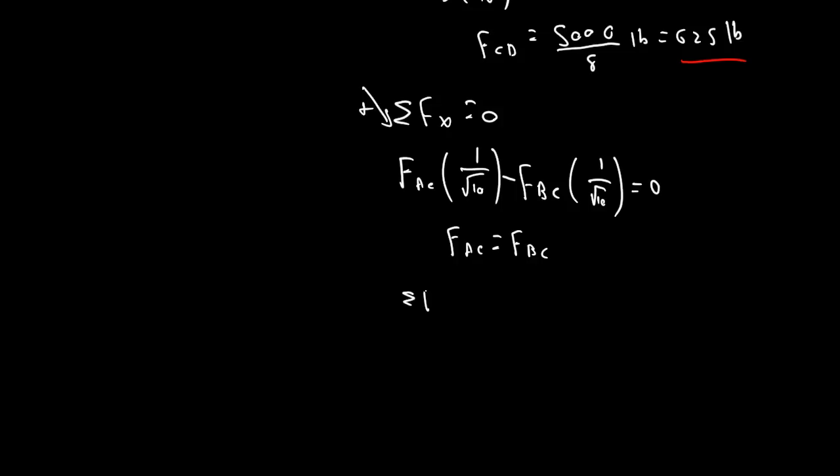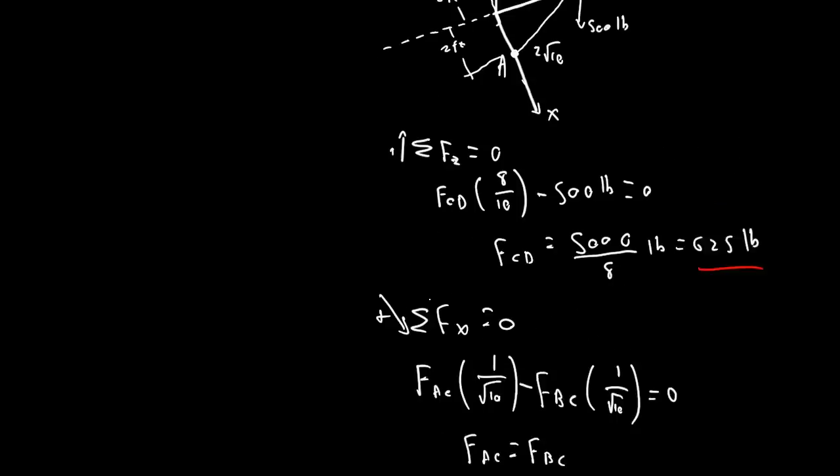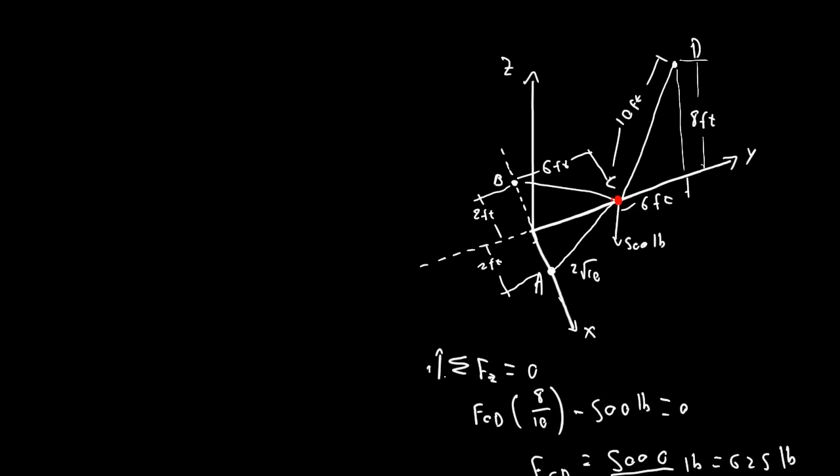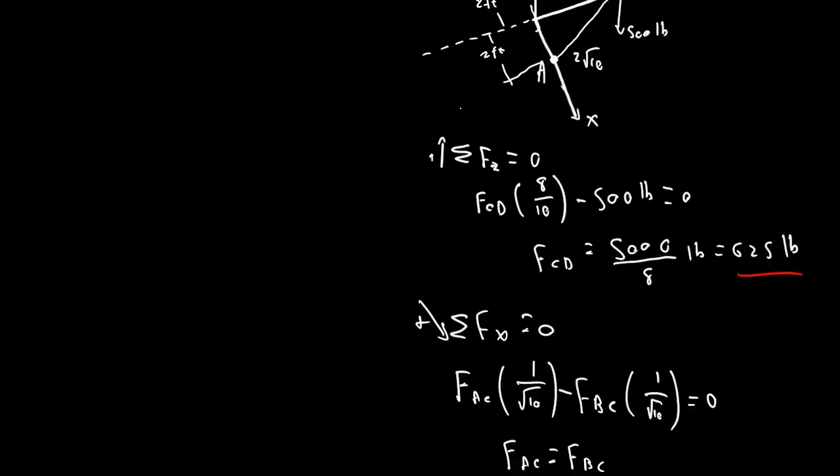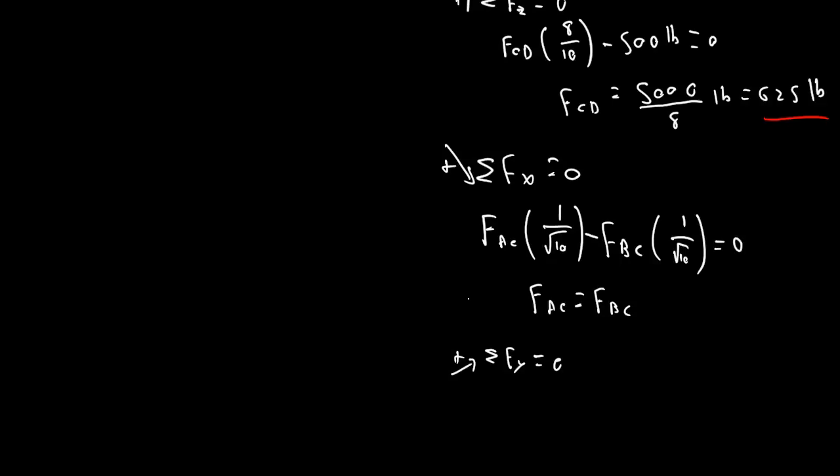Sigma Fy, this direction is positive, equals zero. So, we have 6 over 10 times our Fcd, and that's going to be in the positive y.